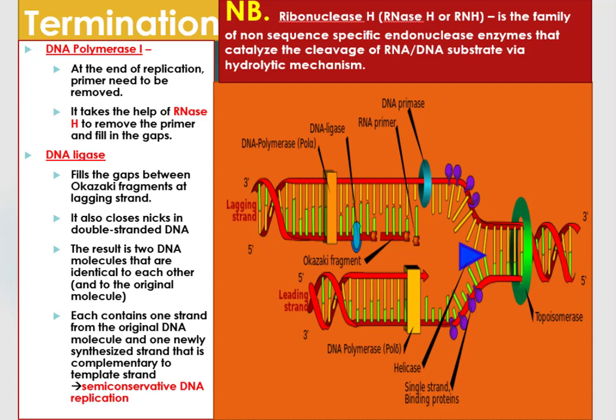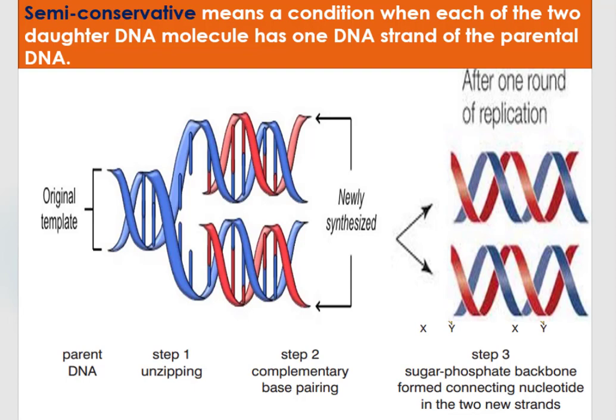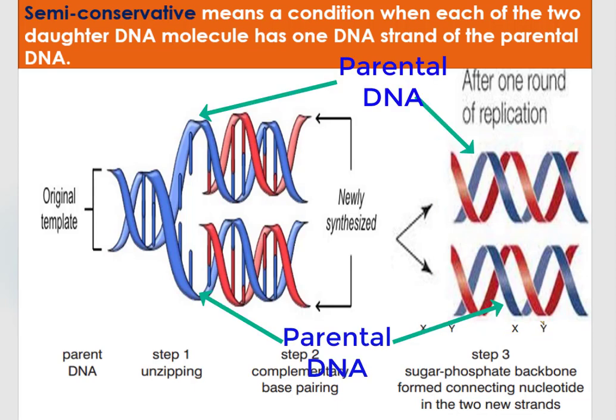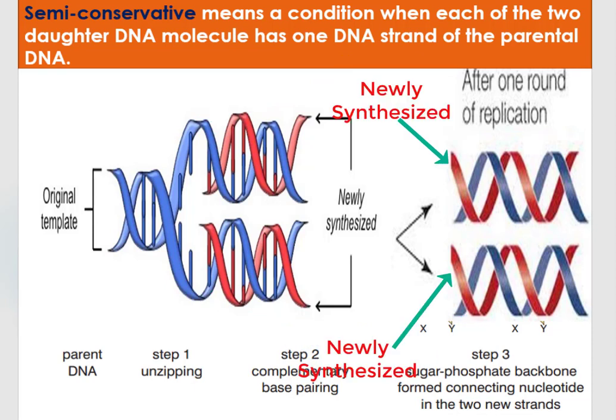Lastly, at the end of the replication process, we acquire two DNA molecules that are identical to each other and to the original parental DNA molecule. Each daughter DNA contains one strand from the original DNA molecule and one newly synthesized strand that is complementary to the template strand. This form of DNA replication is the semi-conservative form. Semi-conservative replication means a condition when each of the two daughter molecules has one DNA strand of the parental DNA. You can see from the diagram that the two daughter DNA molecules receive the strand that comes from the parental DNA, and the other is the newly synthesized strand.